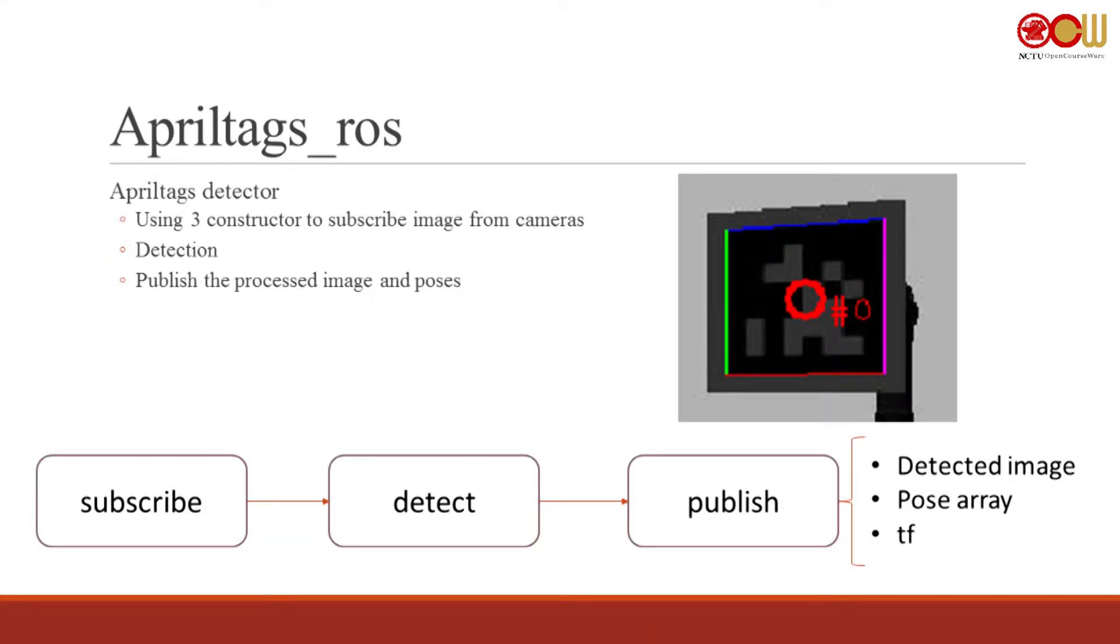The next thing is I have added a little bit to the AprilTag Detector from the source code. I added two constructors instead of one, so each constructor will subscribe an image from a single camera. It will now publish three cameras' information at the same time.